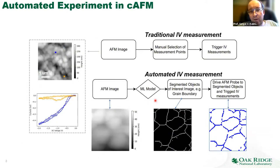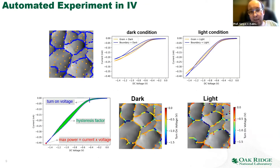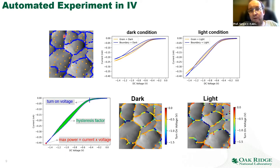If it works on ferroelectrics, we can make it work on hybrid perovskites. The same approach: we take the image, analyze it in real time, find all the grain boundaries, and then run the measurement sampling grains and grain boundaries equally. The yellow dots are where we sample IV behavior within the grain, and the blue dots are where we sample the grain boundary. We give them equal statistical weight. If we used a normal grid, most of our sampling points wouldn't even hit the grain boundary.